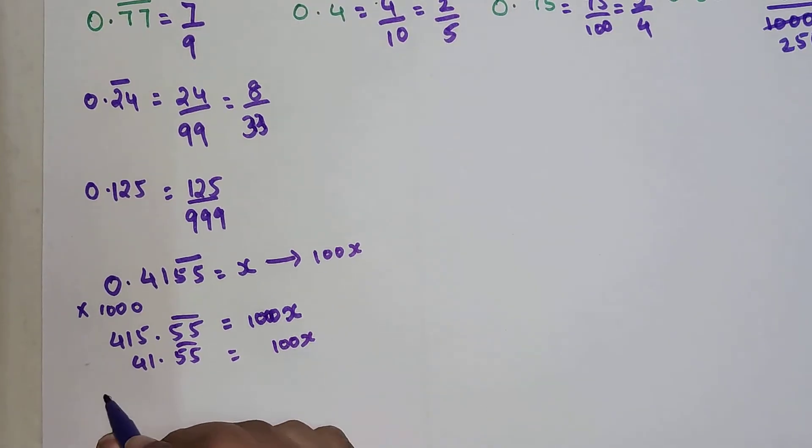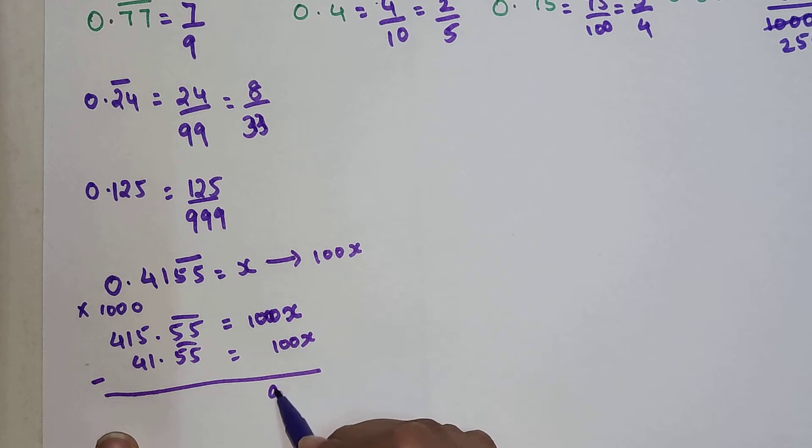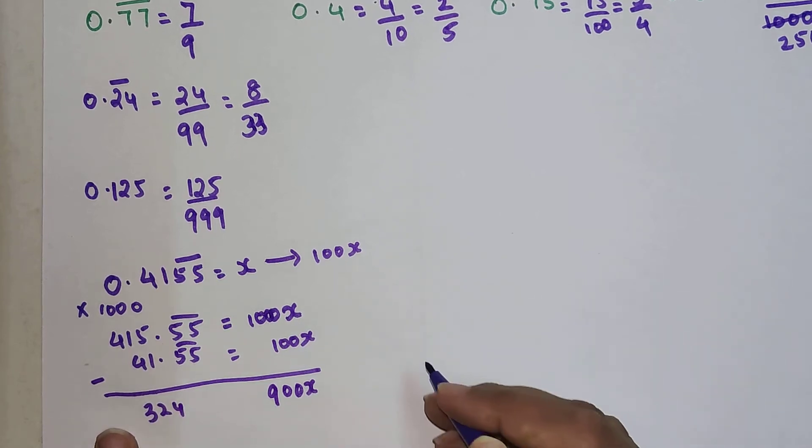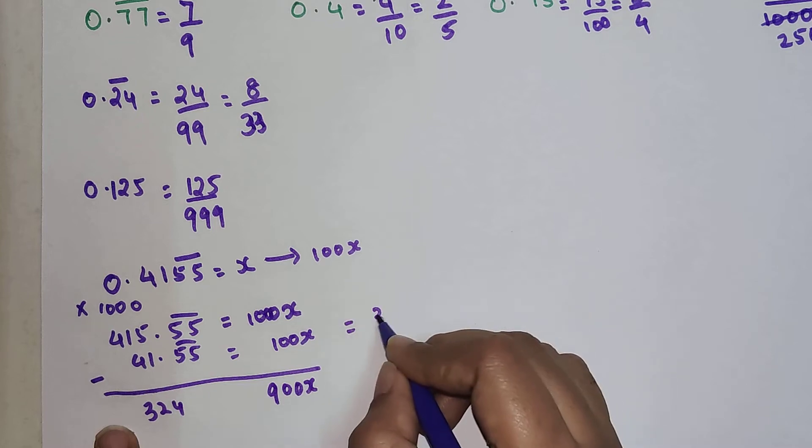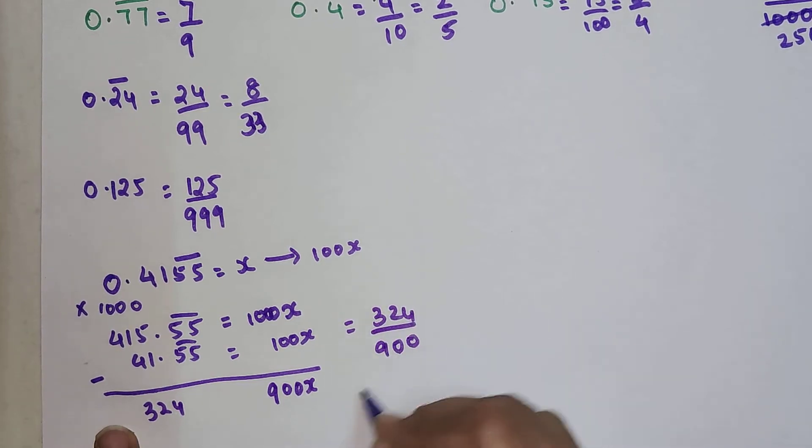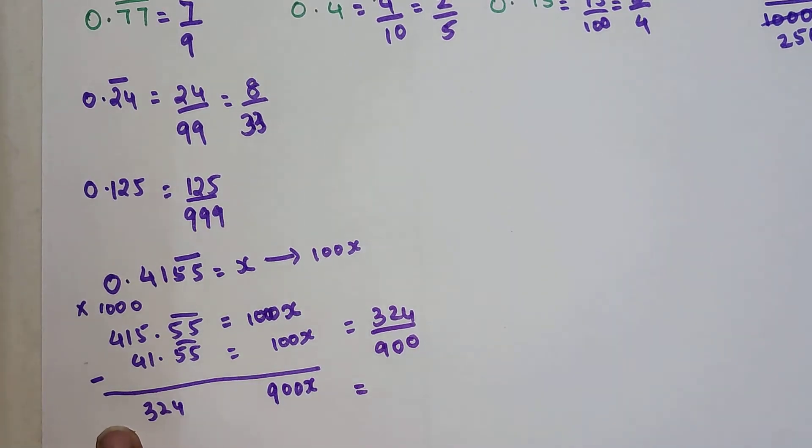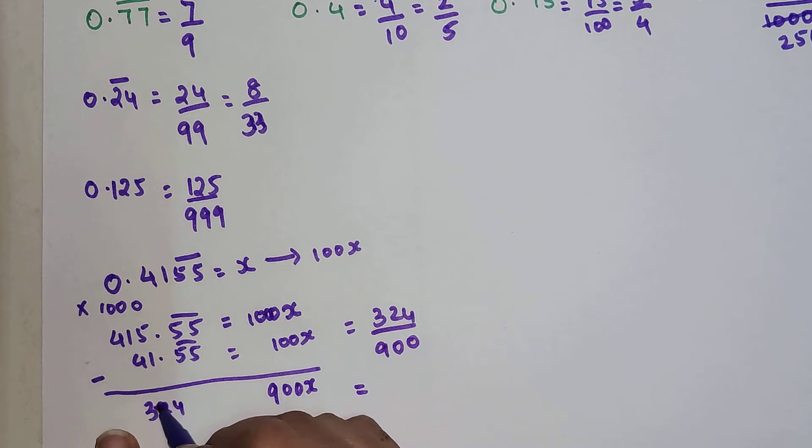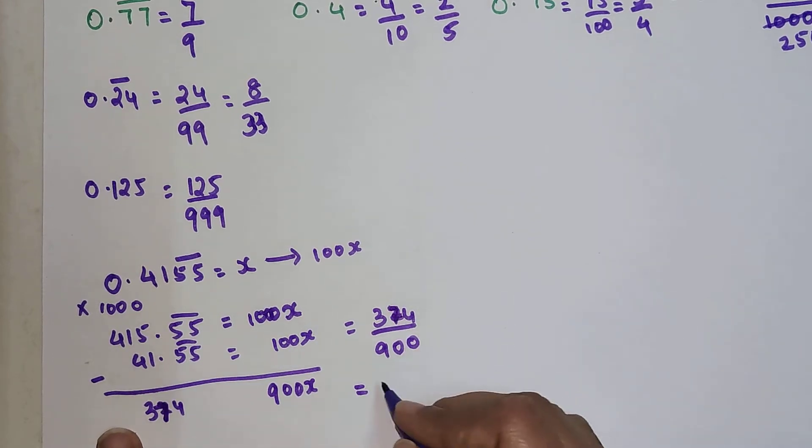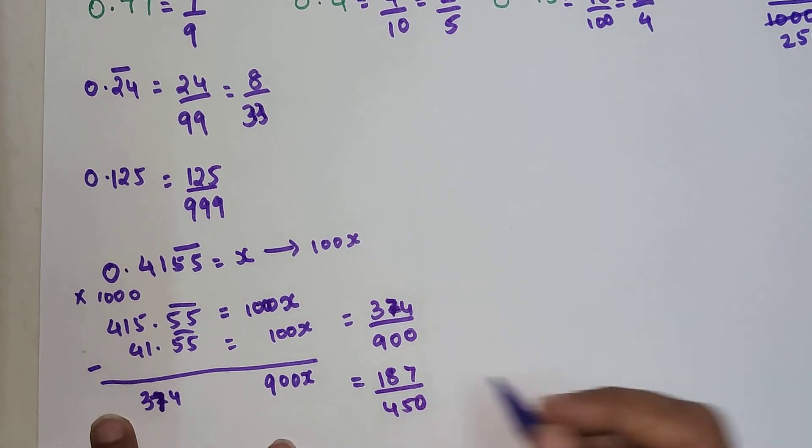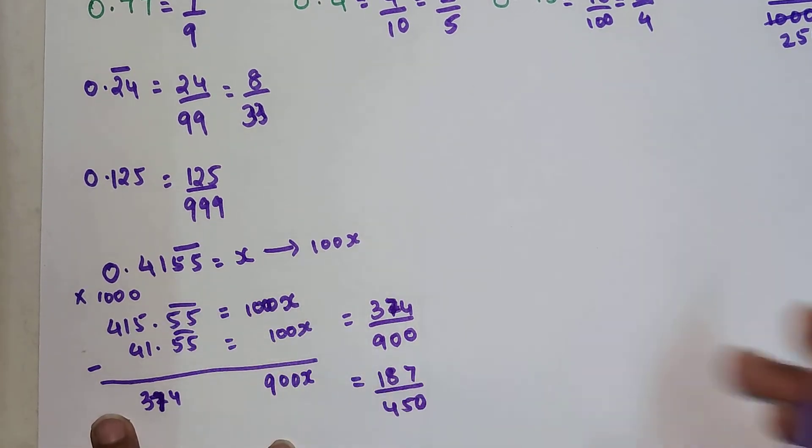All you have to next do is just subtract both of them. So you get 900x, and this is coming out to be 324. Now your final answer will be 324 upon 900, which again gets cancelled. This is 374, so both of them are even numbers. You get the final answer as 187 upon 450. That is your answer for 0.41 and 55 recurring.